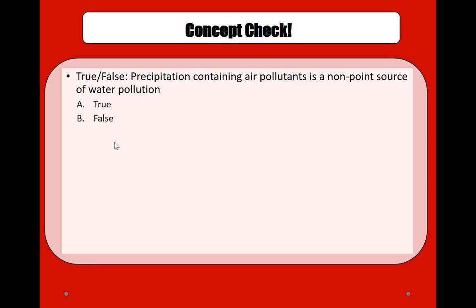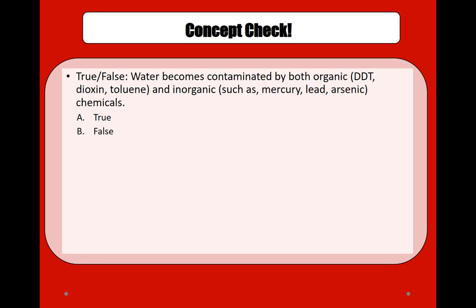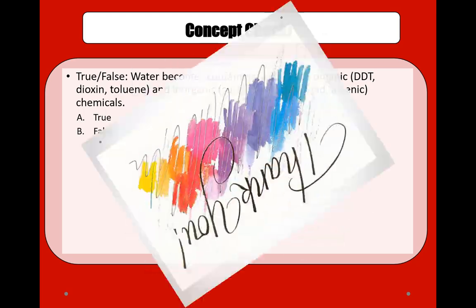Concept check: True or false — precipitation containing air pollutants is a non-point source of water pollution? True. Another concept check: True or false — water becomes contaminated by both organic chemicals such as DDT, dioxin, and toluene, and inorganic chemicals such as mercury, lead, and arsenic? True. That's all.